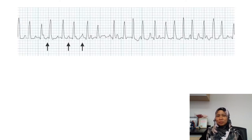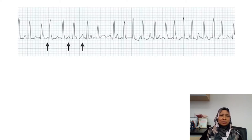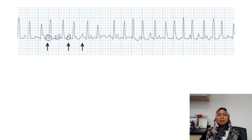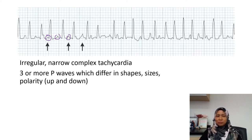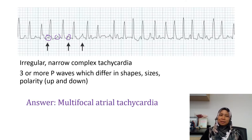The next strip is also an irregular rhythm with narrow complexes. However, we can see there are some P waves — here and here — with different shapes and sizes. This is an irregular narrow complex tachycardia with three or more P waves that are different in shape, size, and polarity. So this is multifocal atrial tachycardia.